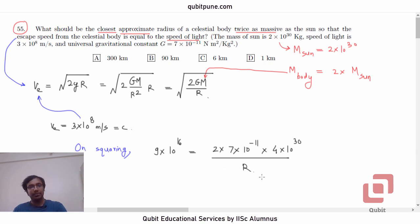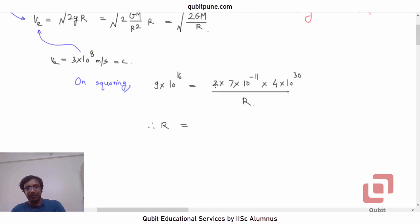That r is what we need to find. So let us shift r here. So r is equal to... 2×7 is 14, 14×4, ×10 to the power 30 minus 11 is 19, 19 minus 16 is 3, upon 9, right?